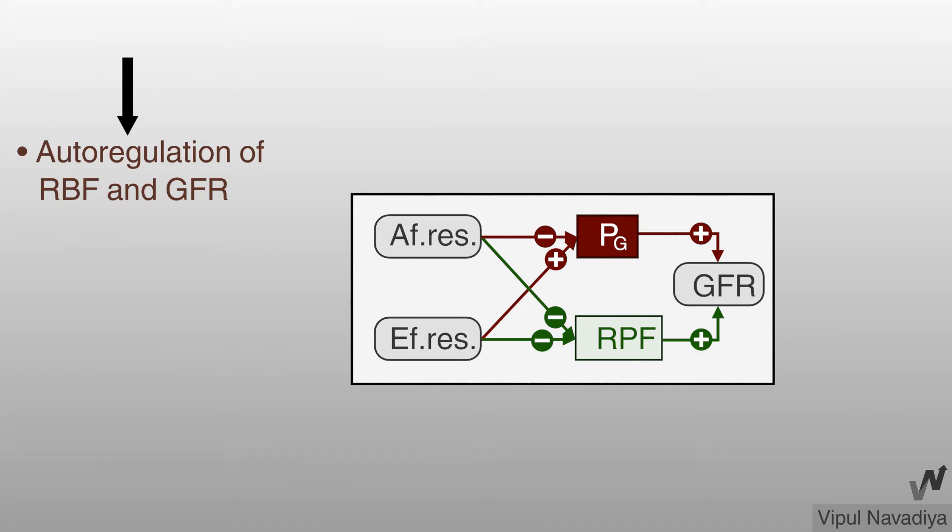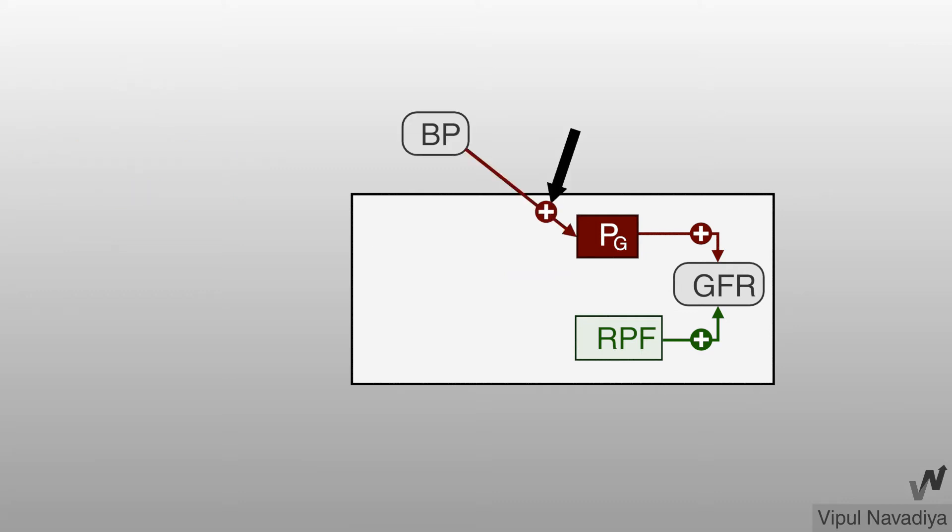It keeps GFR relatively constant with changing systemic arterial pressure. To know the importance of autoregulation, first let's see what would happen without autoregulation. We know that glomerular hydrostatic pressure is essentially blood pressure. So any changes in systemic blood pressure also affects glomerular hydrostatic pressure.